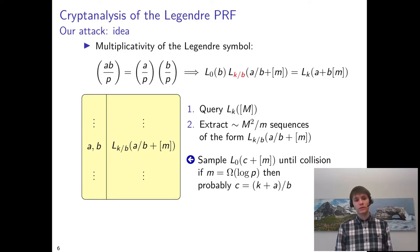The attack proceeds in essentially the same way as before. We query m values of the Legendre PRF, and then because we now have parameters a and b, we can extract nearly m squared sequences from these.